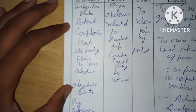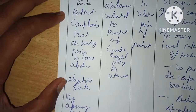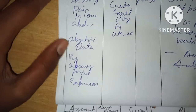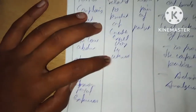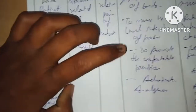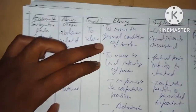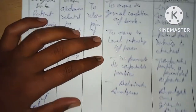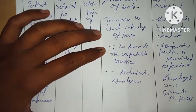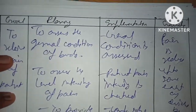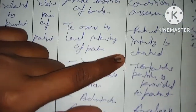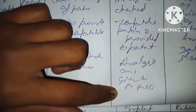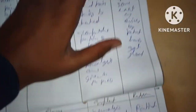NCP 1: Subjective data — patient complains of pain in lower abdomen. Objective data — pain in lower abdomen. Nursing diagnosis: acute pain related to uterine contraction. Goal: to reduce the pain. Planning: assess general condition, assess level of pain, provide comfortable position, administer analgesic. Implementation: general condition assessed, pain level assessed, comfortable position provided, analgesic administered.